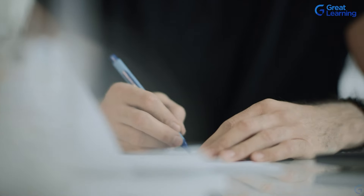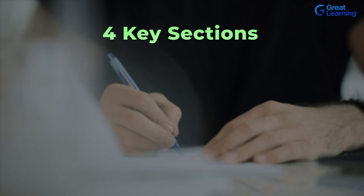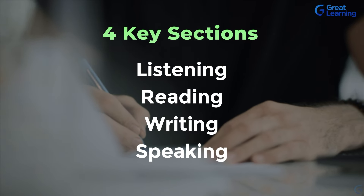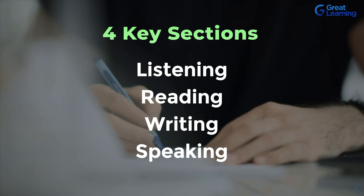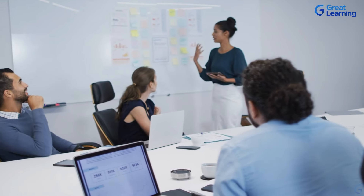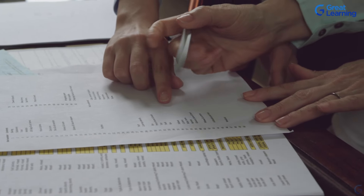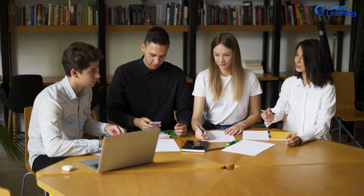We will walk you through the four key sections: listening, reading, writing, and speaking. While we introduce you to each of these sections, we will also share insider facts that will help you score well. We will also discuss the scoring guidelines, explaining how you will be graded and how these scores will be combined to give you an overall band score. By the end of this video, you will be a confident test taker.